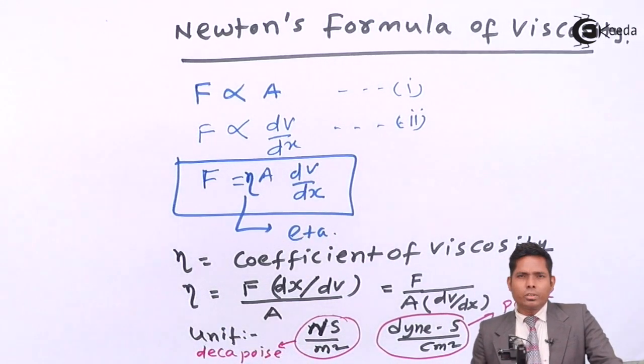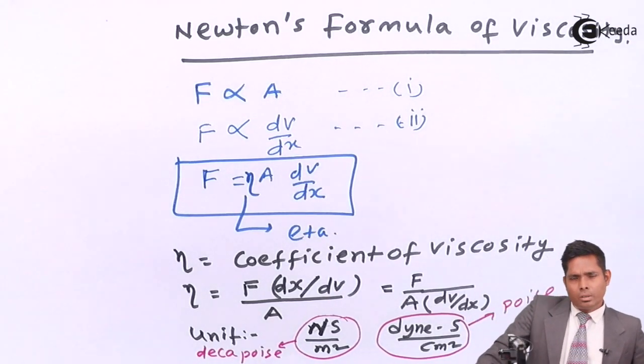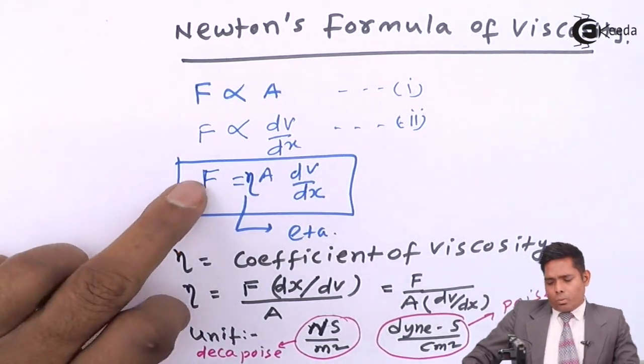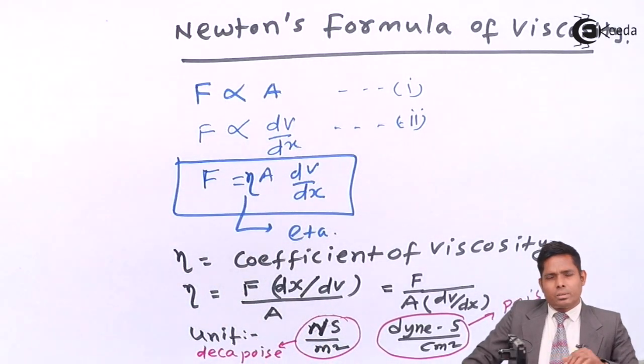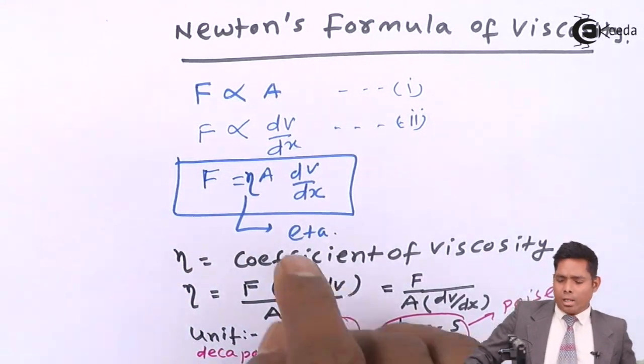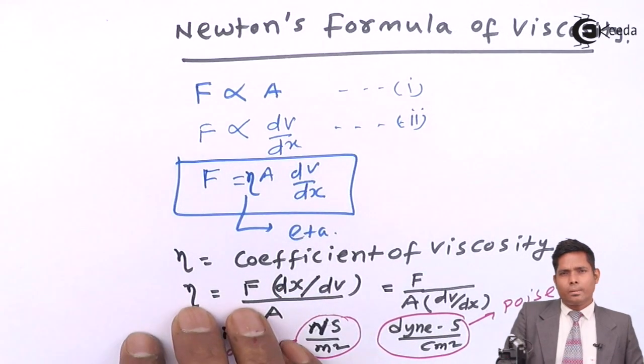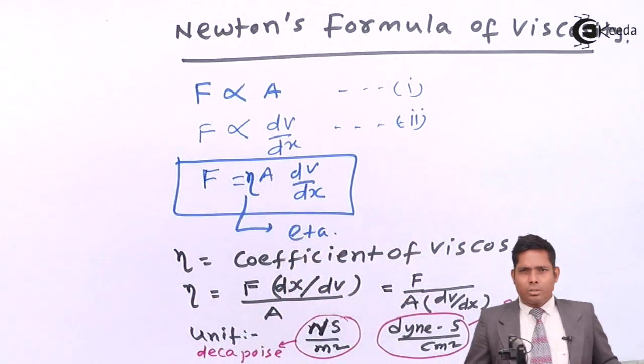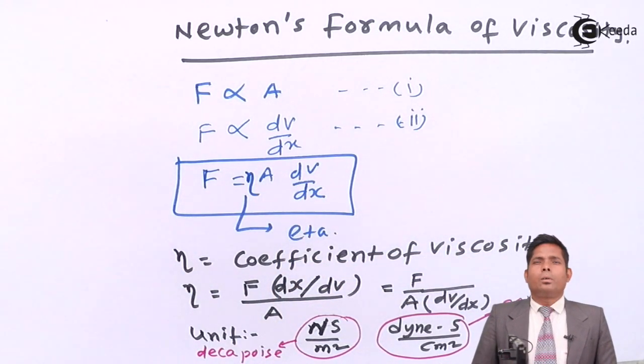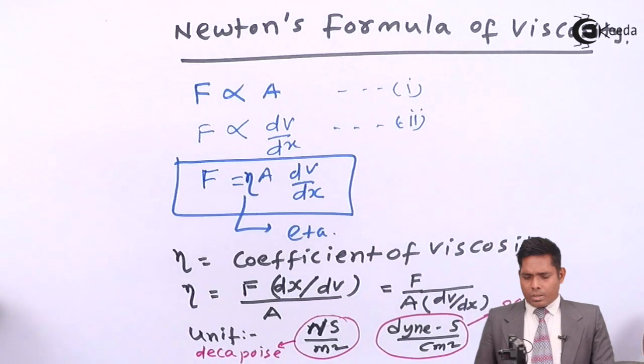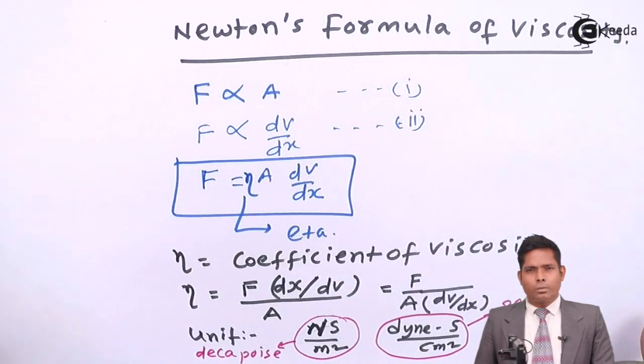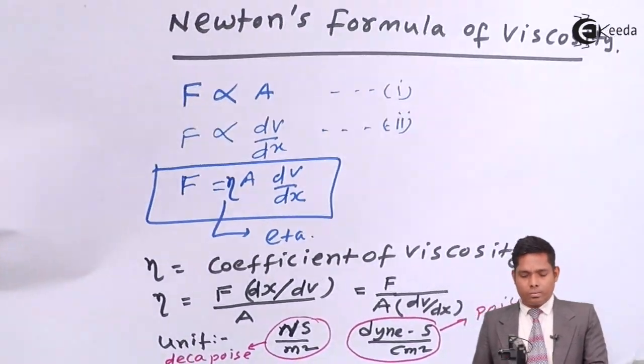And this coefficient of viscosity is the property of the fluid. It just appears as a constant in the equation. The coefficient of viscosity is purely a material or a fluid property. Okay. So that's all for Newton's formula of viscosity or Newton's law of viscosity. Okay. Thank you.